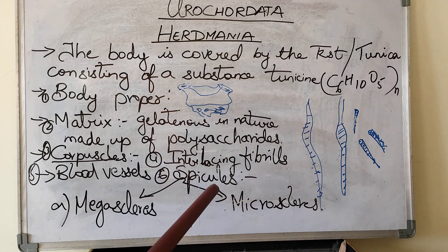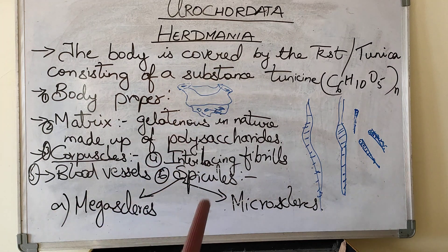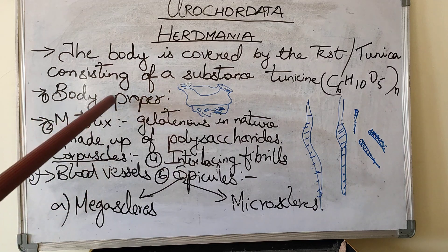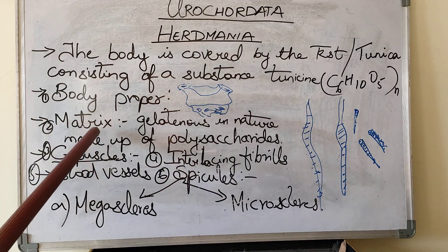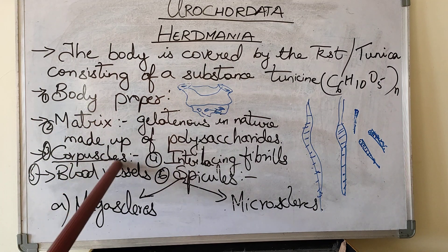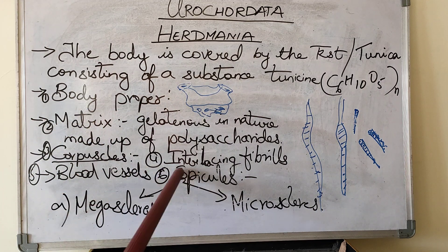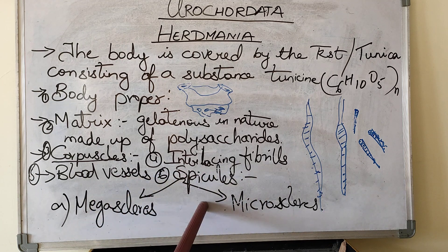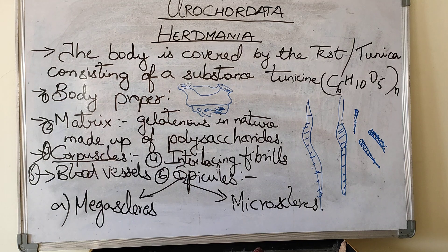So this is about the division of the body, which included the body proper, matrix, corpuscles, interlacing fibrils, blood vessels, and spicules. Please go through this and make a note of it. Thank you.